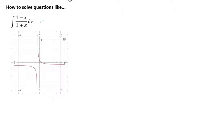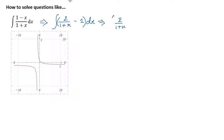With this long division, we achieved a quotient of minus 1 and a remainder of 2. Using these values to convert to proper form, the integrand becomes 2 over (1 plus x) minus 1. Now we can split this into two different integrals: the integral of 2 over (1 plus x) dx, and the integral of minus 1 dx.